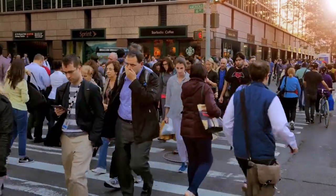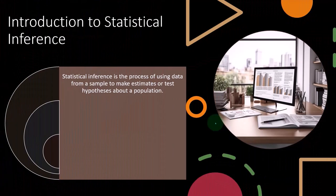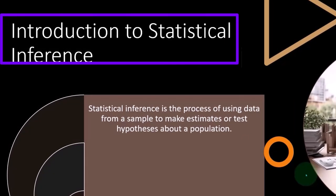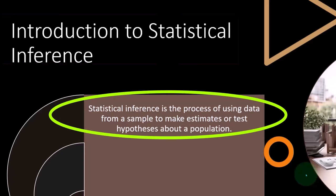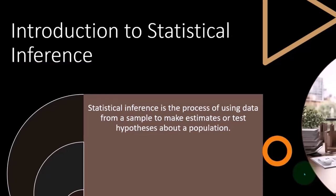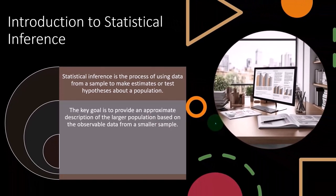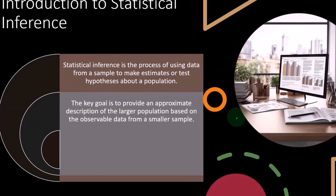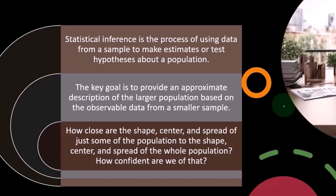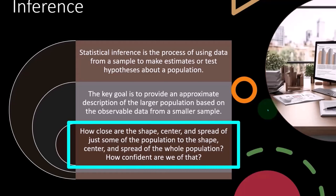We're going to use similar tools as with the first bucket of statistics — looking at things like the average, the mean, the median, and the spread of the data — but what we're hoping to do is infer that onto the entire population so we have predictive power. The key goal is to provide an approximate description of the larger population based on observable data from a smaller sample: how close the shape, center, and spread of just some of the population is to the shape, center, and spread of the whole population.